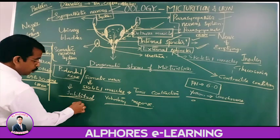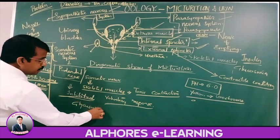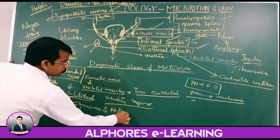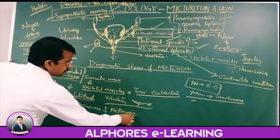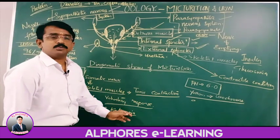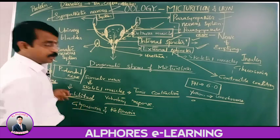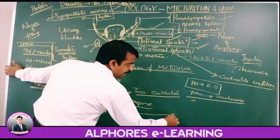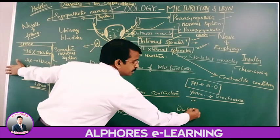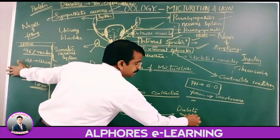Glycosuria and also a condition named ketonuria — these are two indicators. One is glycosuria and one is ketonuria. Ketone bodies, if increased, that condition is named ketonuria. If glucose levels increase, it is named glycosuria.